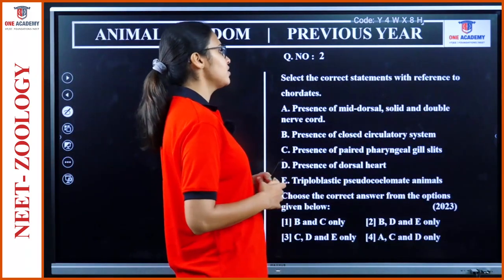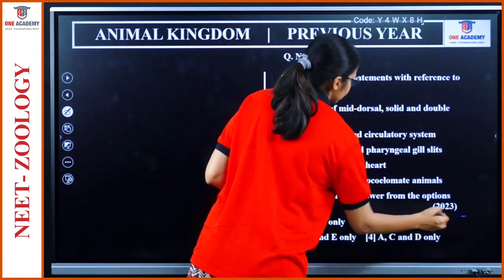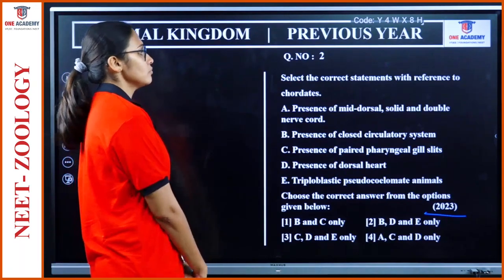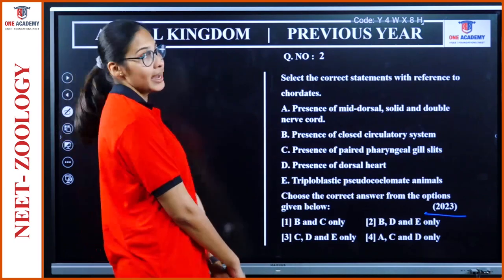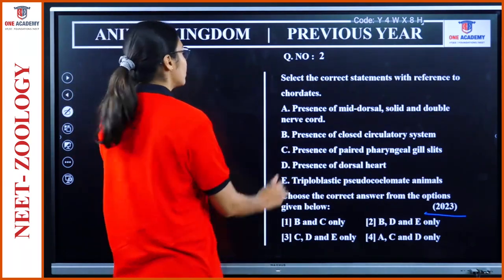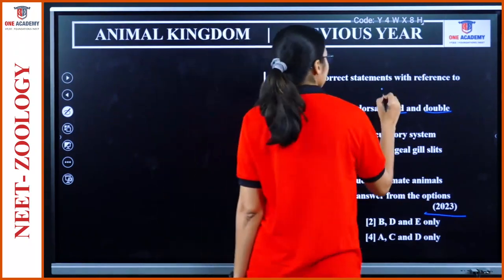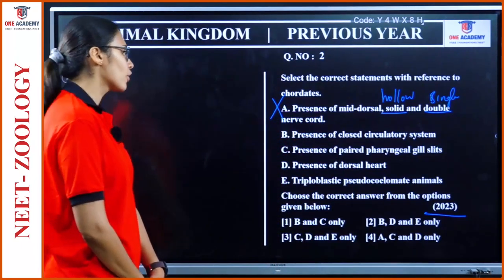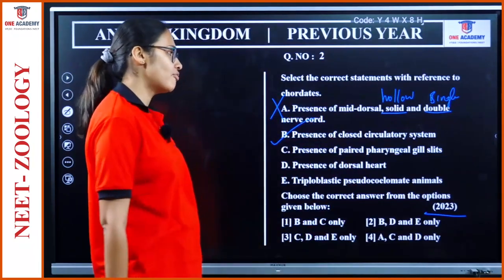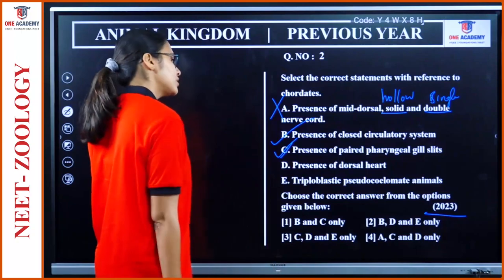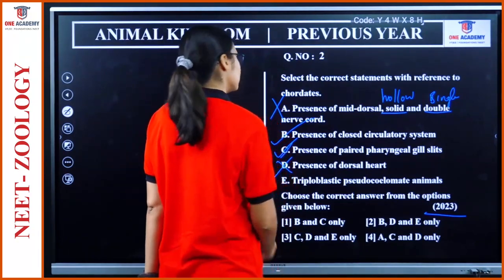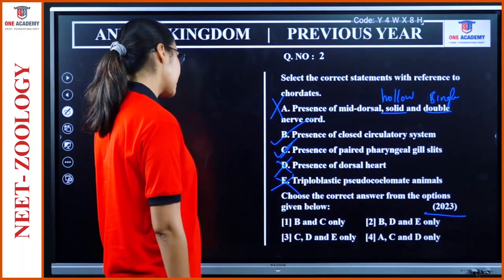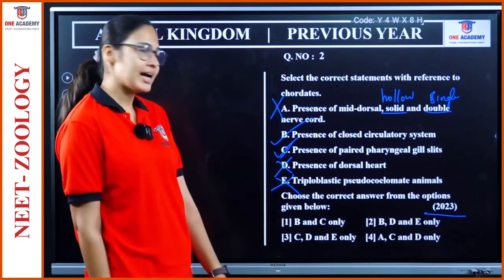Next question from 2023: 'Select the correct statement with reference to chordates.' Option A — presence of mid-dorsal solid and double nerve cord — is wrong; in chordates the nerve cord is hollow and single. Presence of closed circulatory system is correct. Presence of paired pharyngeal gill slits — yes. Presence of dorsal heart — wrong, it is a ventral heart. Triploblastic pseudocoelomate — wrong, they are coelomate. So B and C are the correct statements.